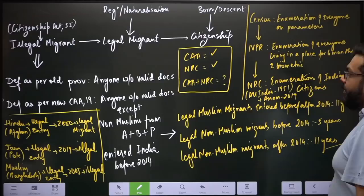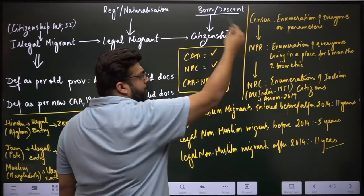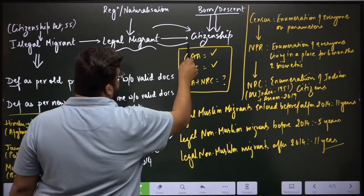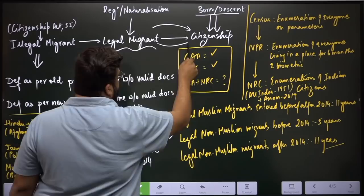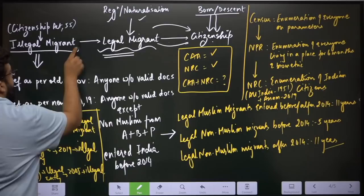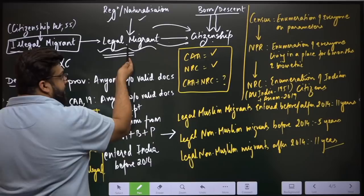Now for the CAA-NRC issue. To become an Indian citizen through registration or naturalization, you have to be a legal migrant. If you are an illegal migrant, you cannot be given Indian citizenship; you will first have to become a legal migrant. Who is an illegal migrant is defined under the Citizenship Act of 1955: originally, anyone without valid documentation is an illegal migrant.